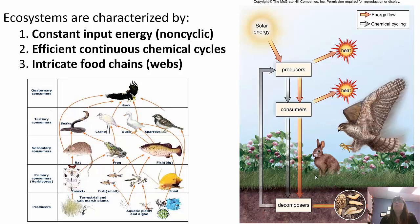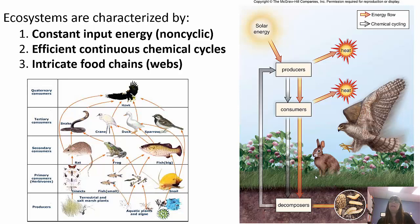Ecosystems are characterized by a constant input of energy, they are very efficient at chemical cycling, and they have intricate food chains or food webs. Food webs show species that are interconnected and can interact at multiple levels — something can eat something else but also be eaten by something else. Solar energy comes in to producers, who transform it into chemical energy that consumers eat. Decomposers break everything down and recycle nutrients. Heat is lost at every level, so every level is less efficient than the one before — it's actually more efficient to be a herbivore than a carnivore.